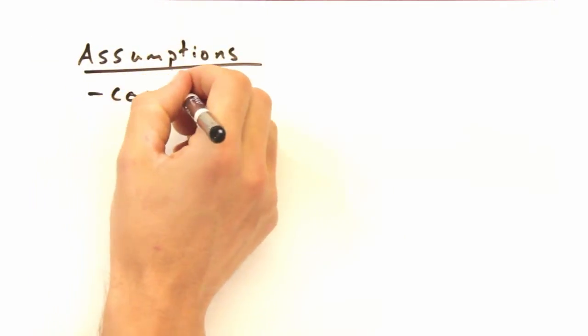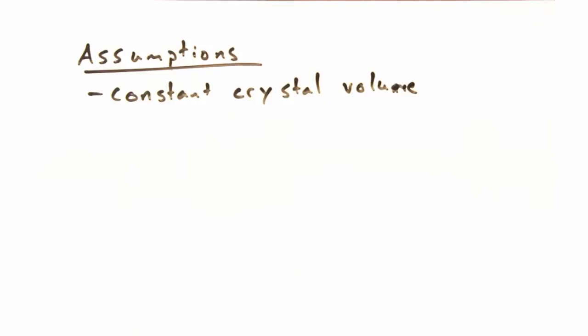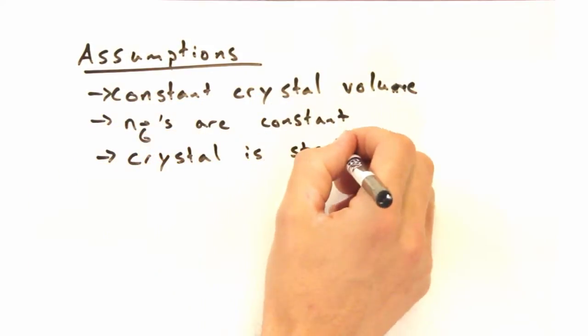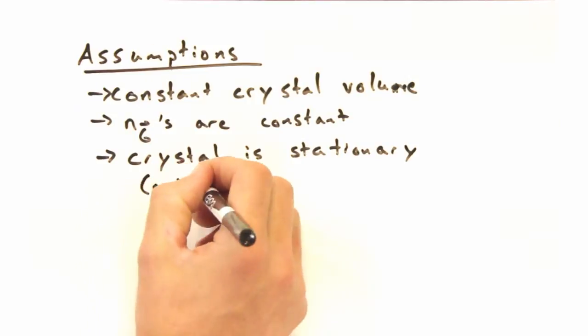Okay, let's make some reasonable assumptions, namely that the crystal's volume is constant, the Fourier terms for the scattering density are also constant, and that we're not moving the crystal around in real space as we do our experiment.